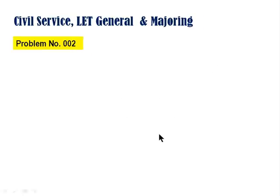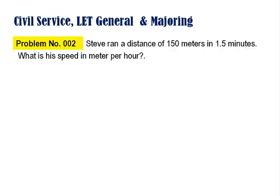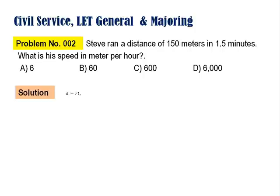Problem number 002: Steve ran a distance of 150 meters in 1.5 minutes. What is his speed in meters per hour? The choices are: A) 6, B) 60, C) 600, D) 6,000. For the solution, this is a distance problem. The formula to be used is d equals r times t, where d is distance, r is rate, and t is time.